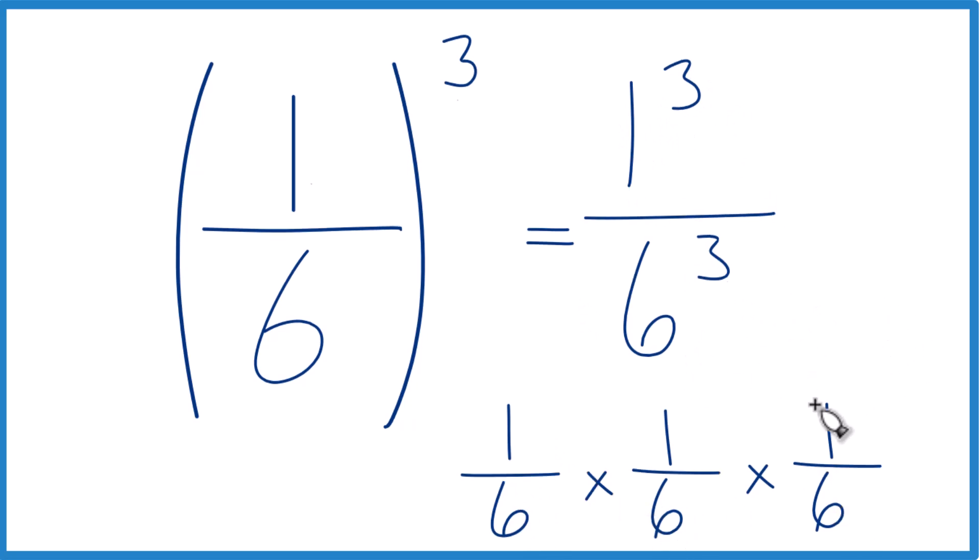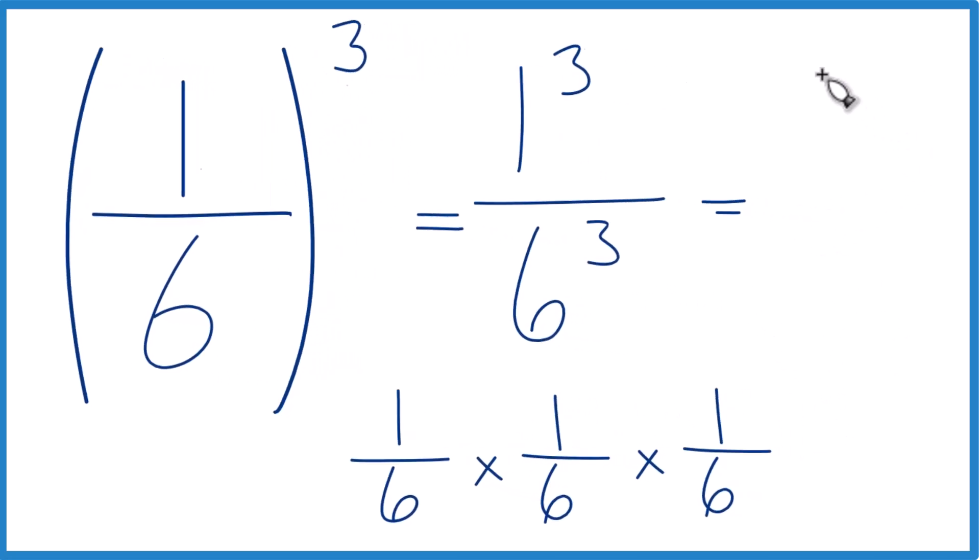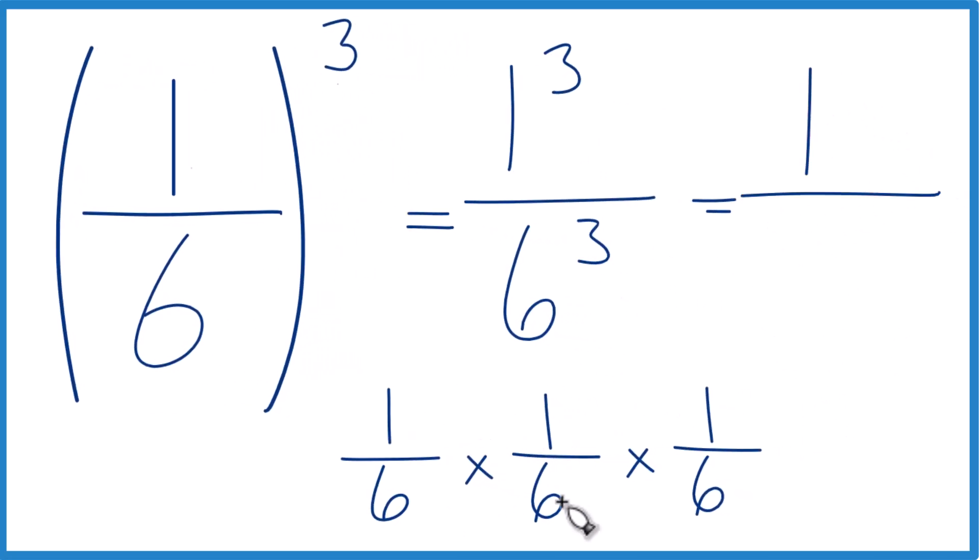Now when we do the math, 1 times 1 times 1, that equals 1. And 6 times 6, that's 36. 36 times 6 is 216.